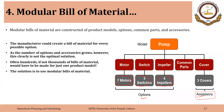In the same pump example, we have seven types of motors, five types of switches, four types of impellers, and three types of covers — giving 420 possible combinations. However, since the customer can also choose not to have covers, covers effectively have four options (three cover types plus the no-cover choice), bringing the total to 560 combinations. Notice that by adding just one option, the number of combinations increased from 420 to 560.